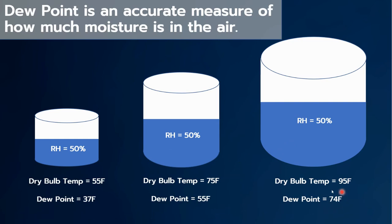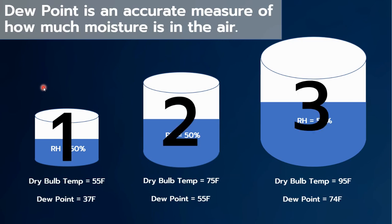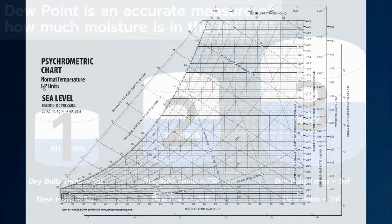So dew point is a very accurate measure of how much physical water we have in the air, as opposed to relative humidity. If we label these containers one, two, and three, we'll go ahead and plot them on a psychrometric chart so you can get a better idea of why this is.